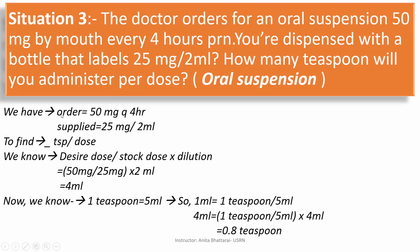The ordered dose here is 50 mg Q4 hourly, and the bottle is labeled 25 mg per 2 ml — this is the supplied dose. Using the formula desired dose divided by stock dose multiplied by dilution: desired dose is 50 mg, divided by available dose of 25 mg, and since 25 mg is present in 2 ml, we multiply by 2 ml. After calculating, we get 4 ml.